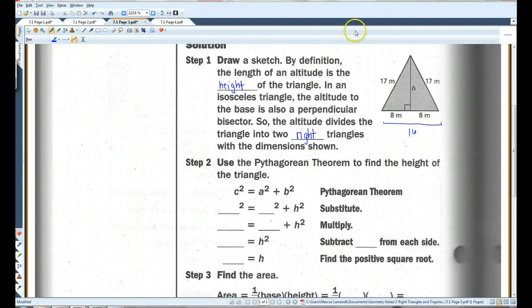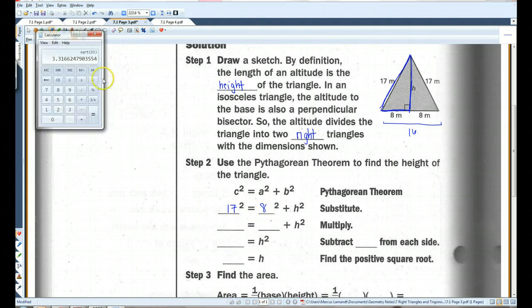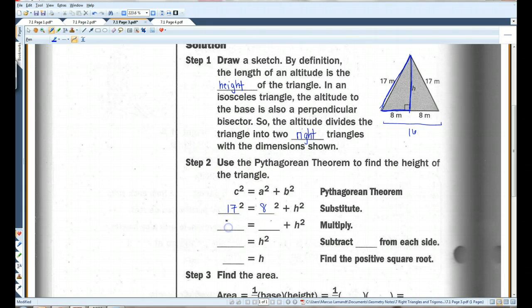So, I'm going to focus on just one of these right triangles and use the Pythagorean Theorem to solve it. If you look here, my hypotenuse is 17, and my legs are 8 and H. So, let's plug that in. C squared equals A squared plus B squared. My C is 17. H is my B, so A is going to be 8. 17 squared. I believe it's 289. I'm right. Yay. 8 squared is 64. Let's subtract.